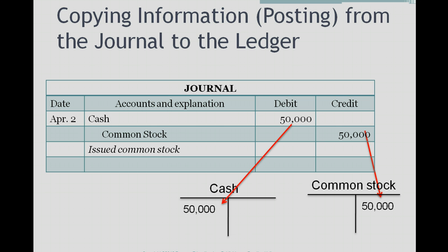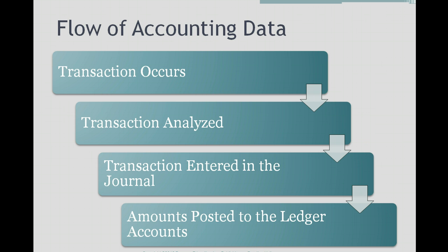Again, the first steps of the accounting cycle are: a transaction occurs, the transaction is analyzed, the transaction is entered in the journal, and then we post those amounts from the journal to the ledger accounts. Remember, the T accounts that we look at are the ledger accounts.